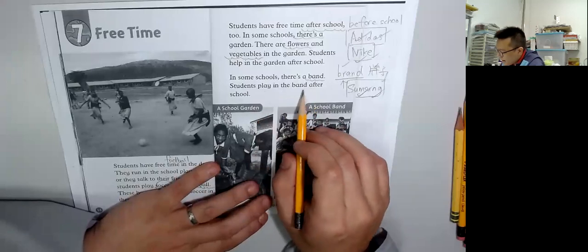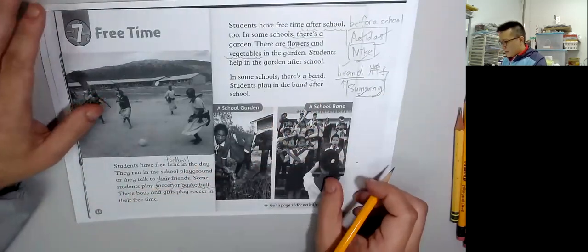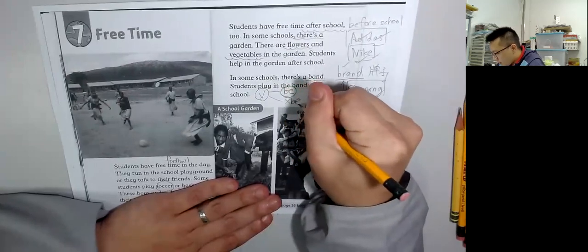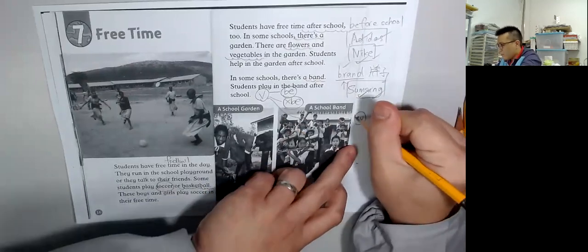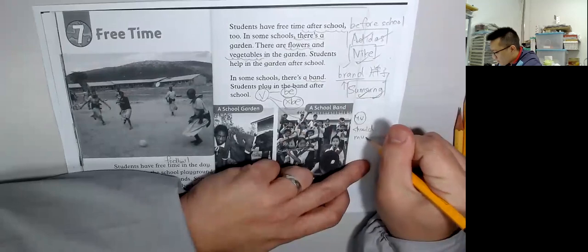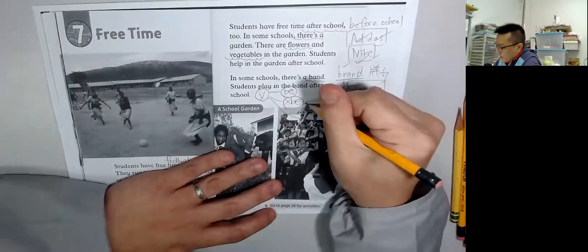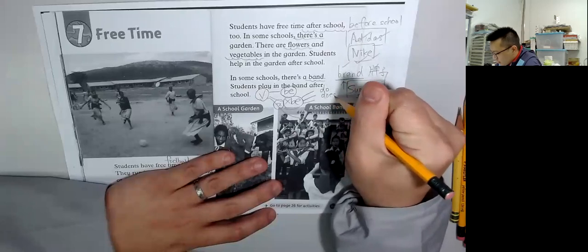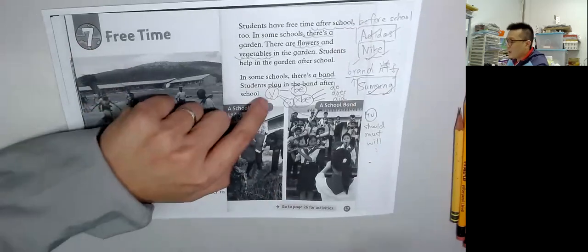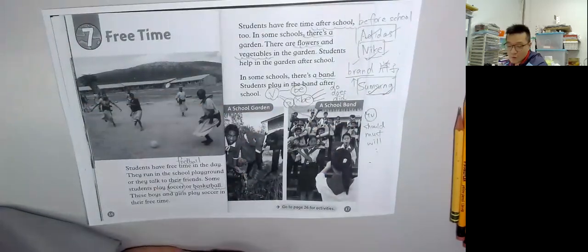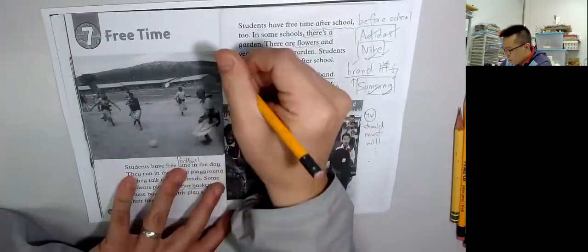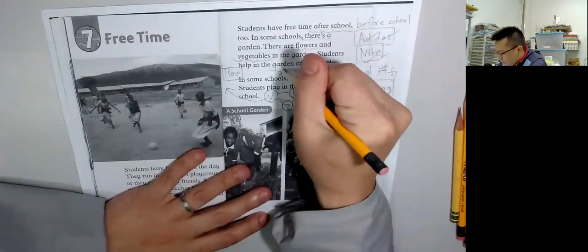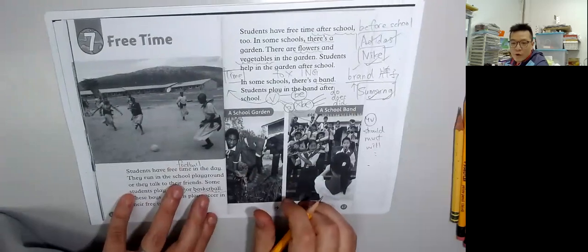Students play in the band after school. Verbs are divided into three categories. The first category is be, the second category is not be, the third category we call modal verbs - should, must, will. These are common. The second category verbs are the most common in daily life, like or think. The second category verbs need to know three more words: do, does, and did.